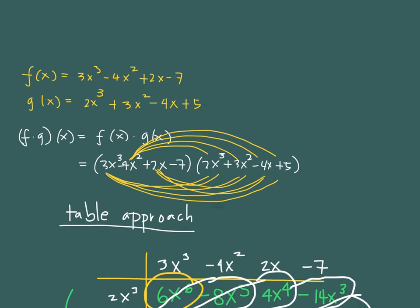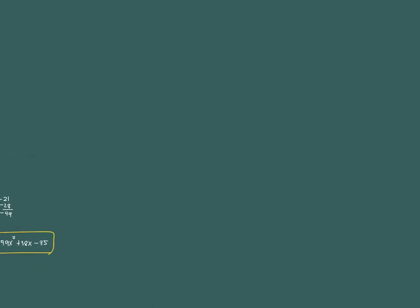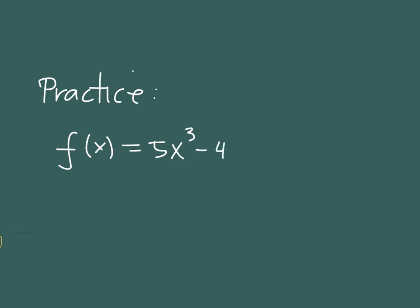For practice, I'll be giving you one problem and try it on your own. Suppose we have, so this is for practice. I'll give you a shorter one. So let's say f(x) is equal to 5x³ - 4x² + 3x - 2. Let's just use a shorter g(x) so that you could just practice the approach. So let's say you have, let's say just 2x + 3.